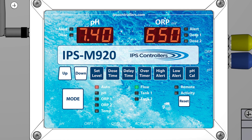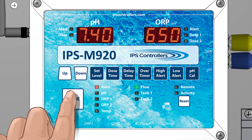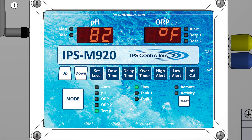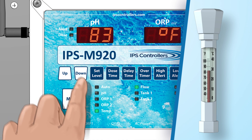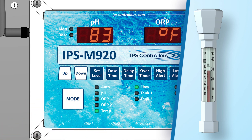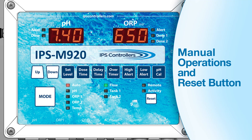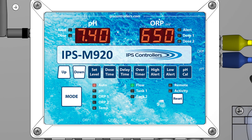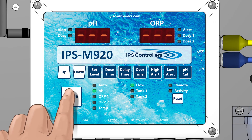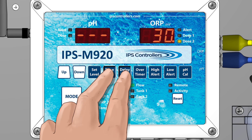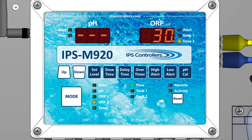If the temperature sensor is installed, the water temperature will be displayed in the digital display window. Press and release the Mode button and cycle through to the Temp mode. Using the Up or Down buttons, the temperature can be calibrated up or down by 10 degrees. The reading can be changed from Fahrenheit to Celsius by pressing the pH Cal button. You can manually force the controller to run a dose cycle in the pH, ORP1, and ORP2 modes if the mode is in a timed feed setting. Hold down the Dose Time button and then press the Delay Time button; the controller will dose for the time set in the dose time setting.